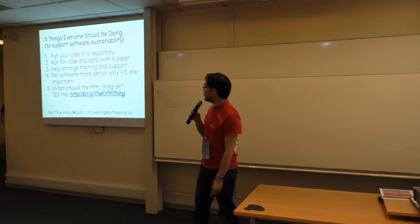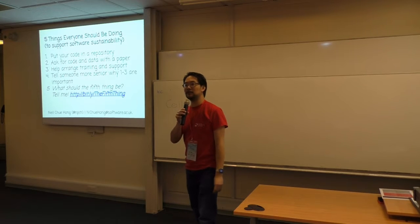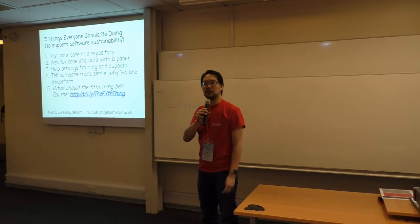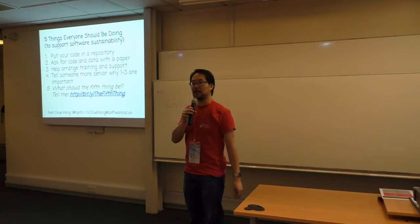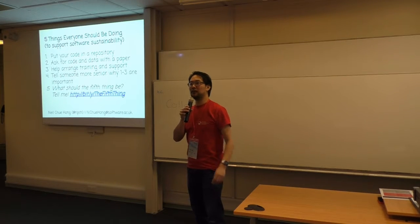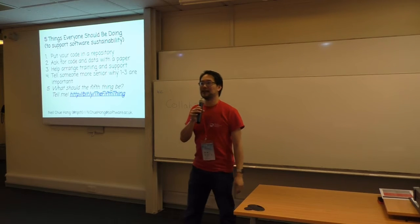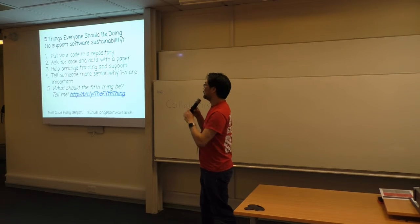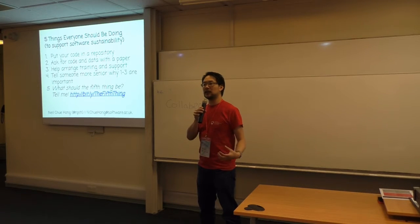You can go to that link — bit.ly slash TheFifthThing. Note the capitals, because I believe it doesn't work without the capitals, and that should take you to a poll that lets you decide whether any of the other suggestions are good ones, or to put in your own suggestion. I haven't actually tried this, so if the buzzing on my wrist is people on Slack saying the link doesn't work, I'll fix it after this talk. But I'd really like you to let me know.